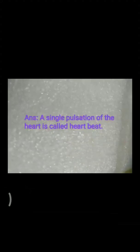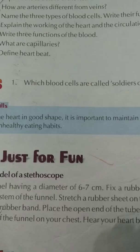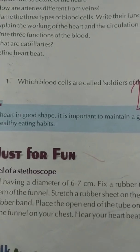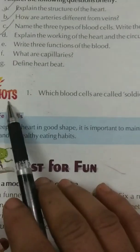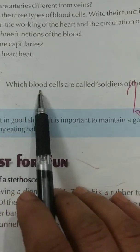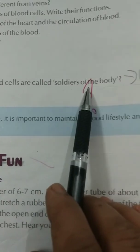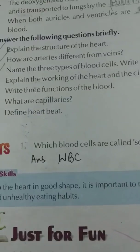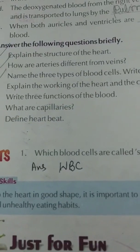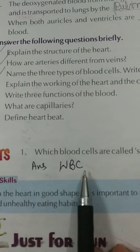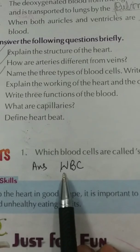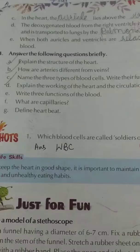Define heartbeat. A single pulsation of the heart is called a heartbeat. Which blood cells are called the soldiers of the body? White blood cells (WBC).